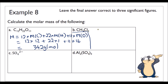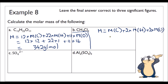Example 8b: The molar mass is the molar mass of carbon plus 2 times the molar mass of hydrogen plus 2 times the molar mass of chlorine: 12 plus 2 times 1 plus 2 times 35.5 = 12 plus 2 plus 71 = 85 grams per mole.